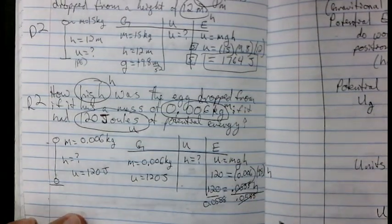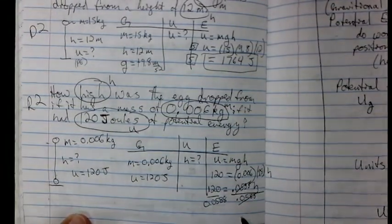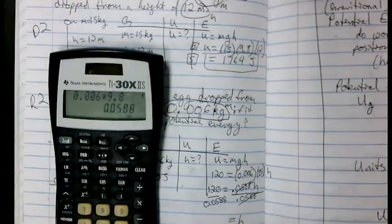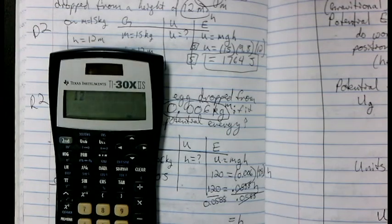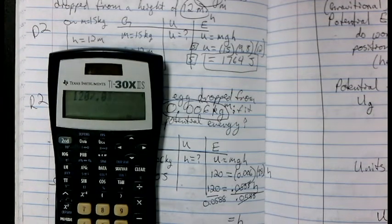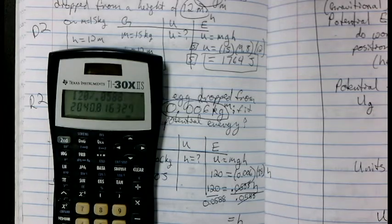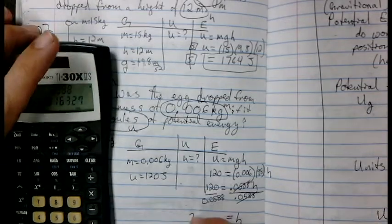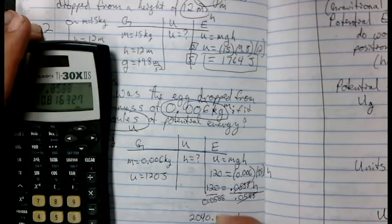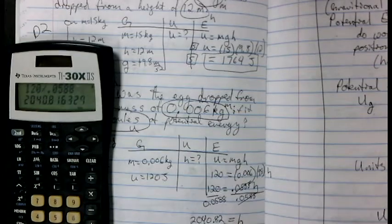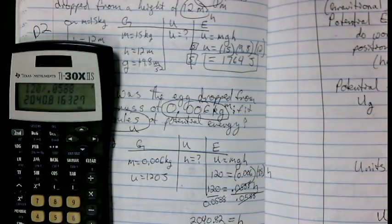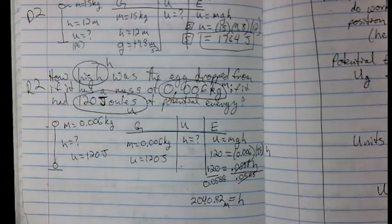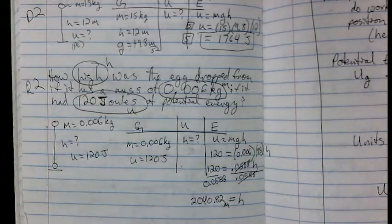0.0588 divided by itself is equal to 1. 1 times H is H. So now we have 120 divided by 0.0588 equals 2040.82 meters. 2,000 meters above the ground is how high that egg would have been dropped at that mass.